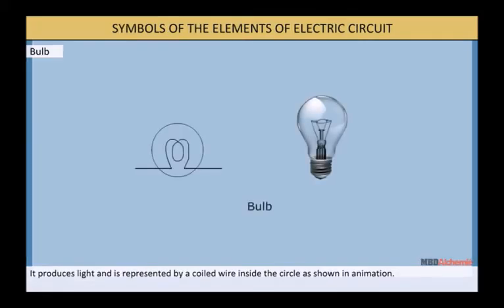Bulb: It produces light and is represented by coiled wire inside a circle as shown.